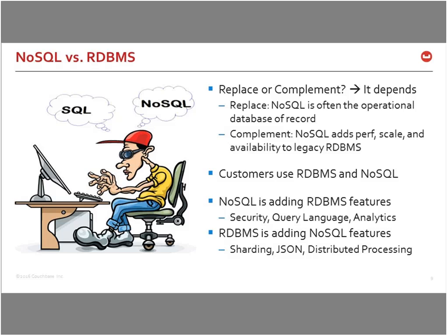Adding to developer confusion, NoSQL vendors are adding capabilities every day to make products more generally applicable. On the flip side, relational vendors are implementing successful NoSQL features like sharding, JSON support, and distributed processing. From a developer standpoint, the question becomes: what are the technical requirements of my application, and which database system addresses my needs most efficiently?